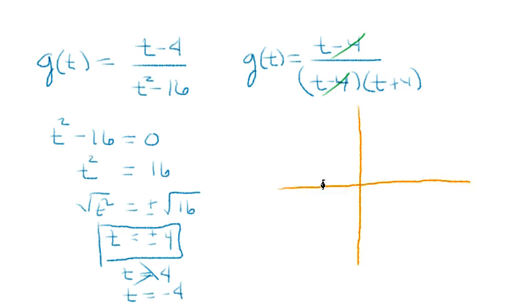So negative 4 is the vertical asymptote. To find where it crosses the y-axis, we plug 0 into the function and get negative 4 over negative 16, which is 1/4. So it crosses at 1/4 on the y-axis. The graph is going to look something like this, with curves on both sides.